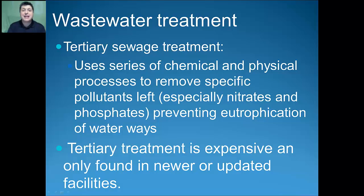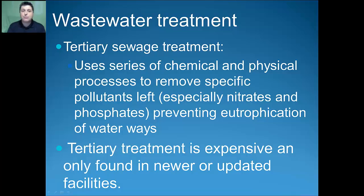Some facilities have a tertiary treatment that takes place on the effluent before it's released into the environment. This involves a series of chemical and physical processes to remove more specific pollutants — in particular, nitrates and phosphates, which are plant nutrients. If those are released into waters, they can cause local eutrophication or eutrophication of waterways that are part of the watershed.